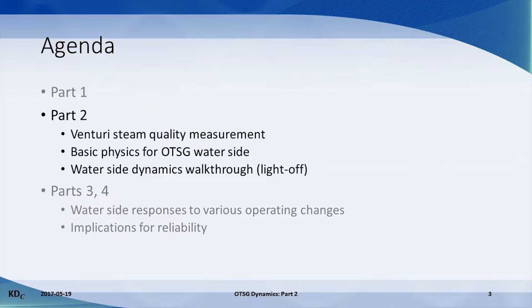The theory begins with an understanding of how the pass-flow venturi is used to measure steam quality. Then we will look at the physics that determine how the waterside behaves in the OTSG tubes. We will finish part two with a walkthrough of an OTSG light-off to demonstrate these principles.